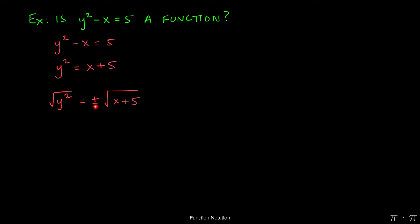So in this case, the square root of y squared will yield plus or minus the square root of x plus 5. Now this cleans up to y equals plus or minus the square root of x plus 5.